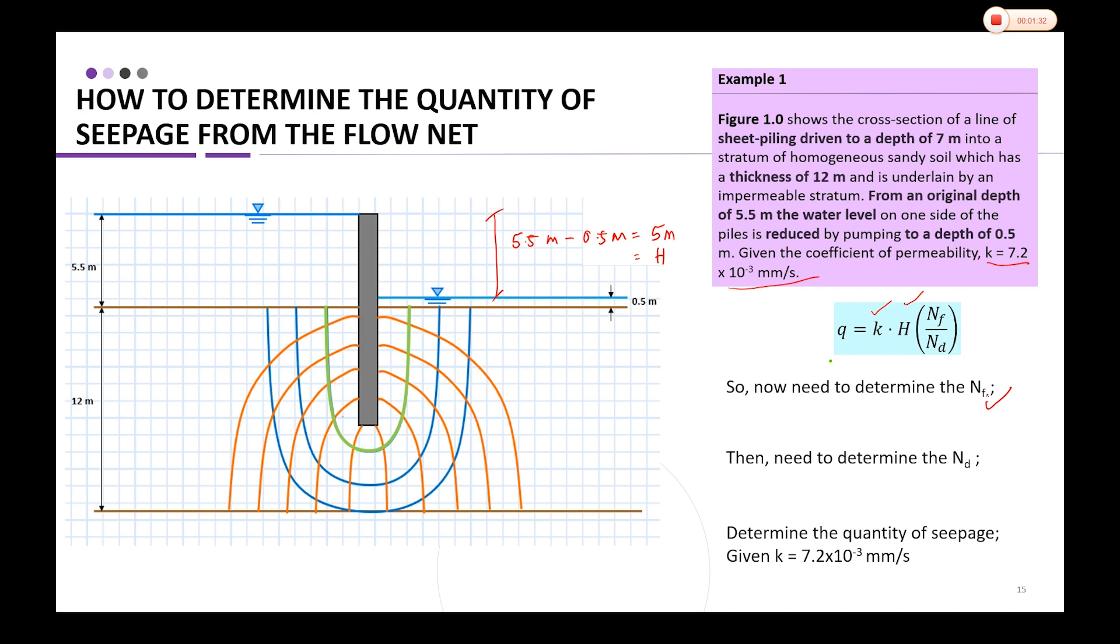Now, how to determine Nf. Nf is the number of flow lines. Since the water flows from upstream to downstream, going downwards and then upward at the lower level, the complete movement from here to here is considered one flow line. Then you have another flow line number two, and another flow line.